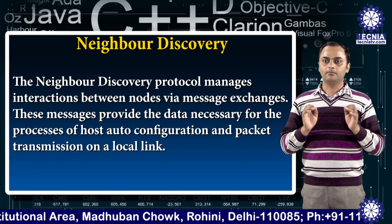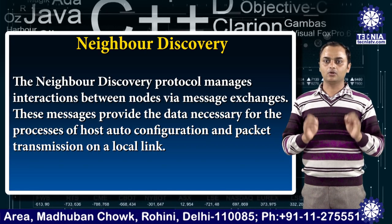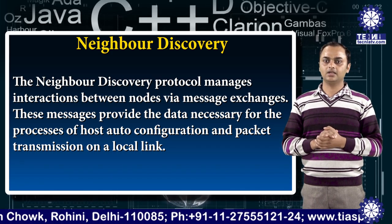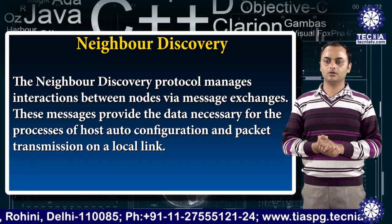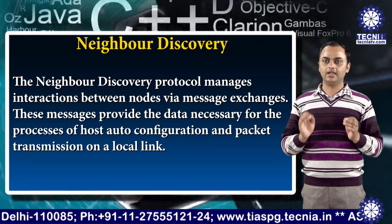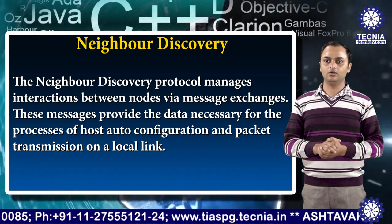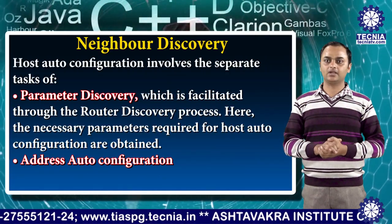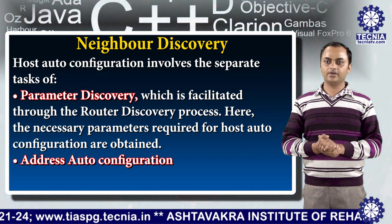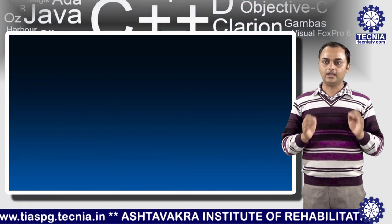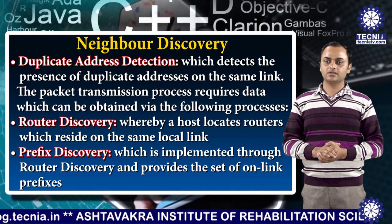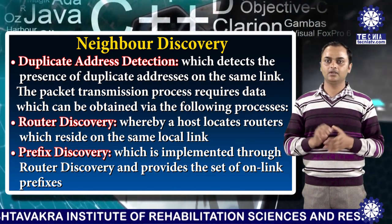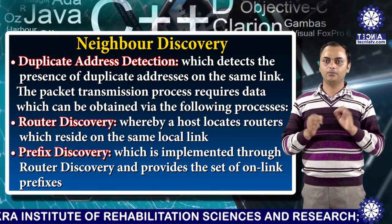The NIWA Discovery protocol manages interaction between nodes via message exchange. This message provides the data necessary for a process of host autoconfiguration and packet transmission on a local link. The host autoconfiguration involves the separate tasks of parameter discovery, address autoconfiguration, and duplicate address detection. The packet transmission process requires data which can be obtained via the following process.